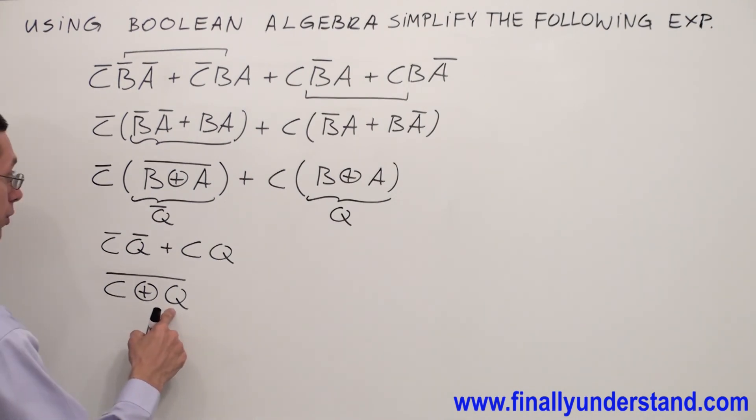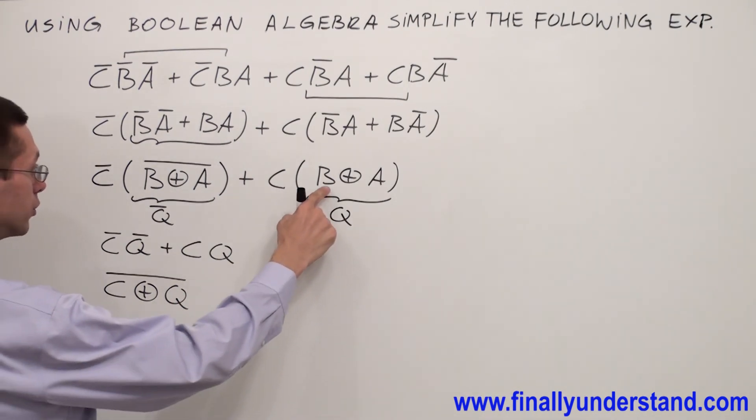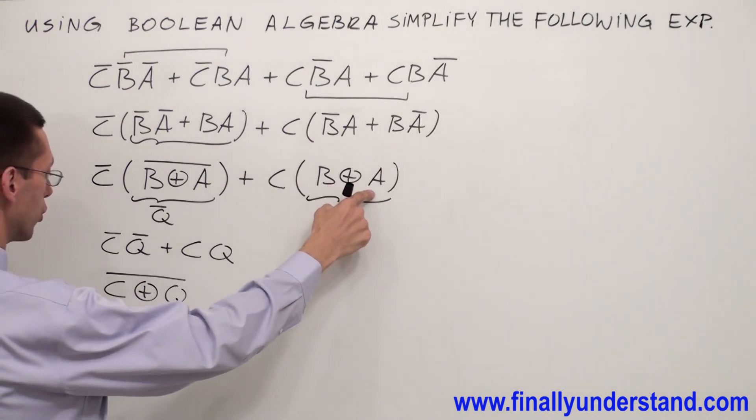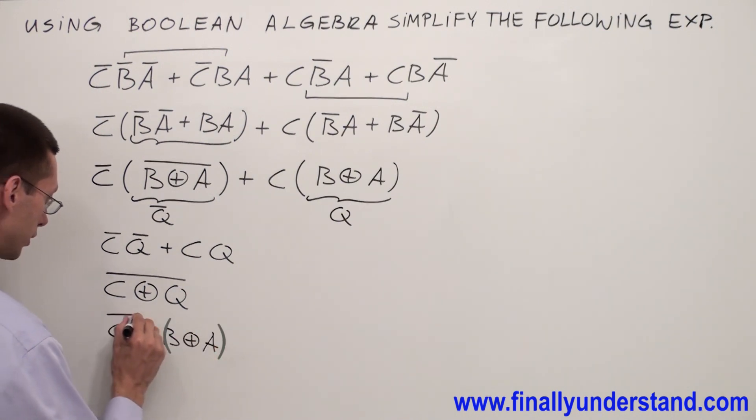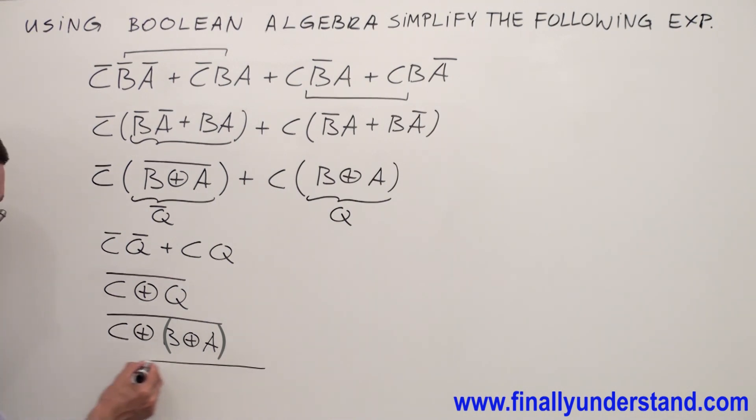We said that Q is equivalent to B exclusive OR A. So instead of Q, I'm going to write this. I'm going to have C, exclusive OR B, exclusive OR A, and everything is going to be inverted. This is the solution to the problem.